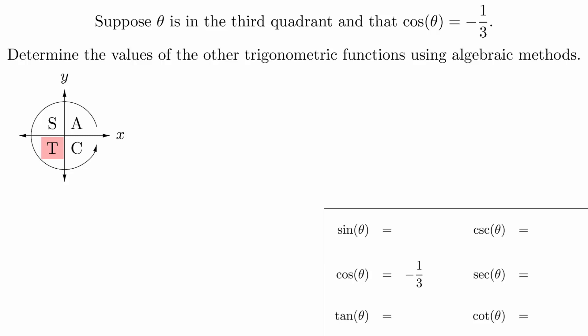First, we need to think about our formulas. We have to identify the values we know and find formulas that can give us information about the other functions. For example, knowing that secant is the reciprocal of cosine means that we know that secant theta is negative three.